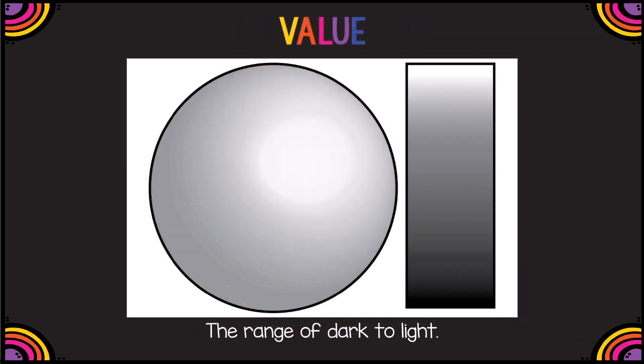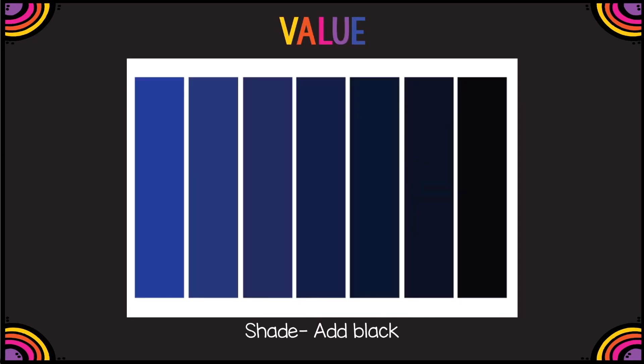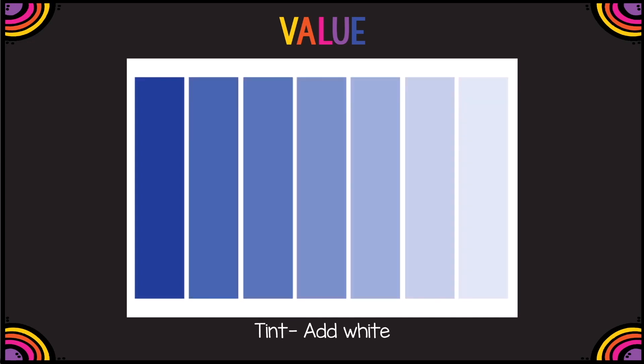Value is how dark or light something is — how hard you press down to make a shadow, and how lightly you touch the paper when you are showing where the light source is. In art, you're either going to press down hard, which is called shading, or add black to your paint. If you add white or lighten up, that's called tinting.